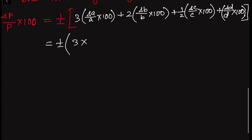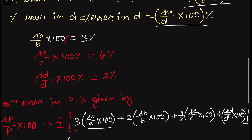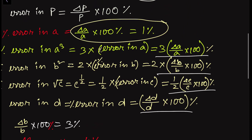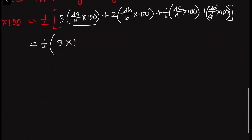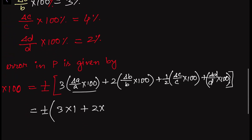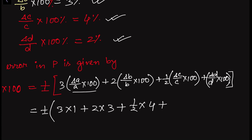Now substituting the values: 3 times delta A by A into 100 is 3 times 1 percent; 2 times delta B by B into 100 is 2 times 3 percent; half times delta C by C into 100 is half times 4 percent; and delta D by D into 100 is 2 percent.